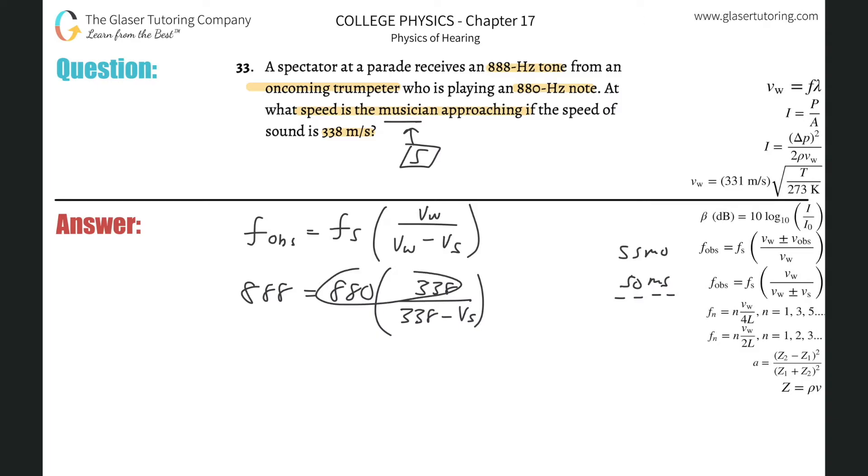So why don't we multiply the 880 by the 338? So we're going to get 888 is equal to 880 times 338. When I do the calculations I'm going to use all the exact values. I might round as I write it down, but this is going to be 297,400 all divided by 338 minus V sub s.